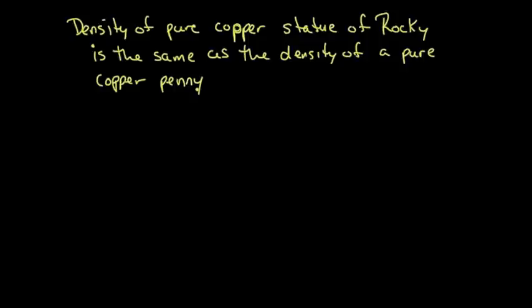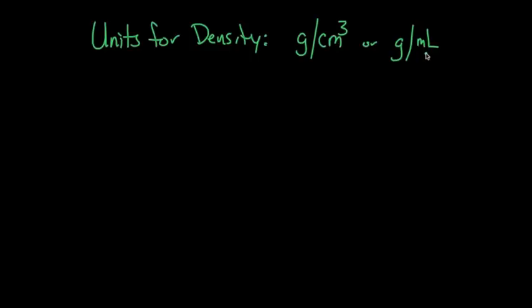So how do we measure density? Density is measured in units of grams per cubic centimeter or grams per milliliter. This should make sense because in our past laboratory experiments, we found that a cubic centimeter occupies the same amount of space as a milliliter.